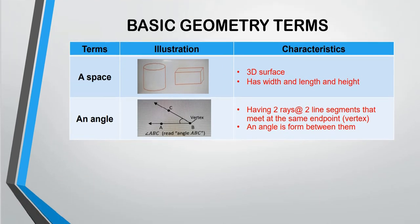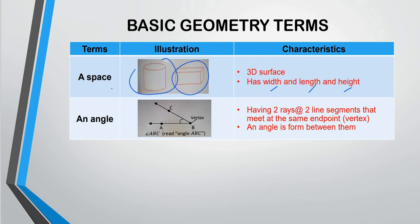Another basic geometry terms. A space. It is a 3D surface. It has width, length and also height. So this is 3D. We call it a space.